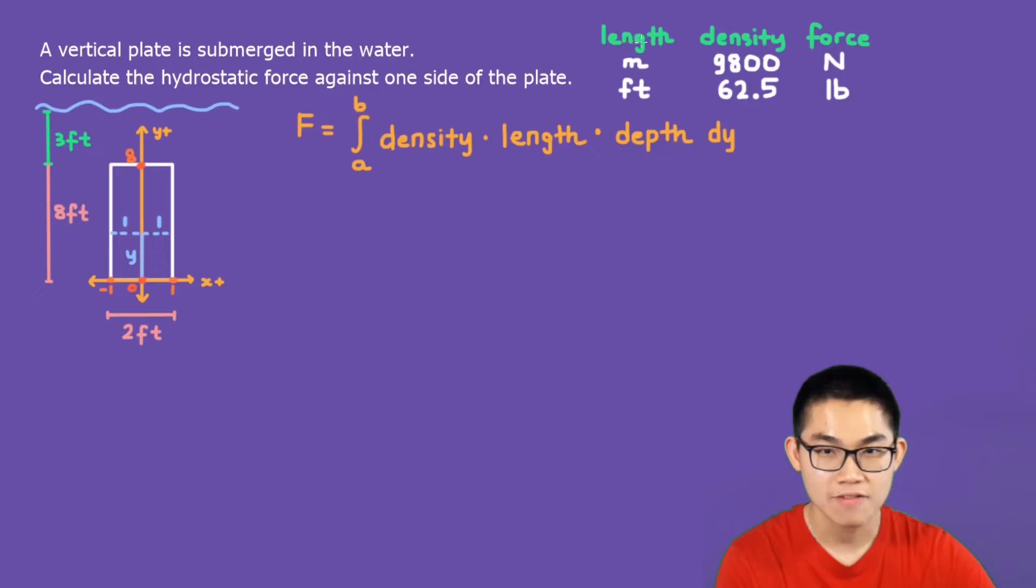So first of all, if the length is in meters, then the density will be 9,800. It's just a number that you have to know and the force will be in newtons.